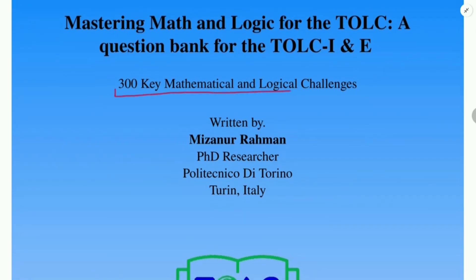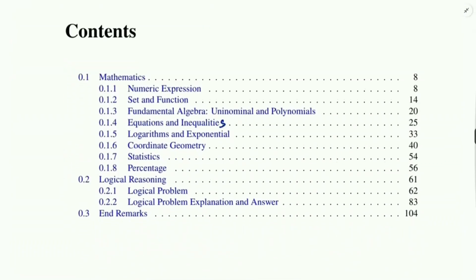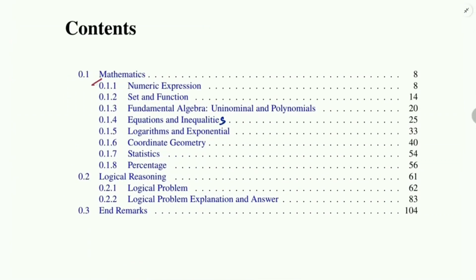I included around 300 mathematical and logical challenges, but within the next month I plan to add 200 more questions, so in total it's going to be 500. Once you buy the book you don't need to pay again because you will have the access. I will show you how to buy it and how to search on Google Books.